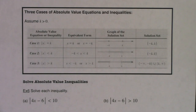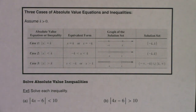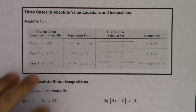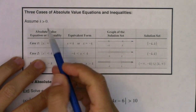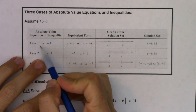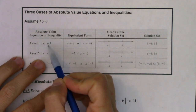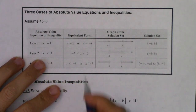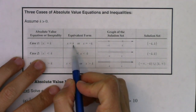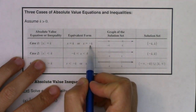Hey Math 31, let's take a look at the three cases of absolute value equations and inequalities. In section 2.6 we talked about case one. This is when you had an expression in an absolute value symbol with an equal sign, and you would set up two equivalent equations — you would say x equals k or x equals negative k.